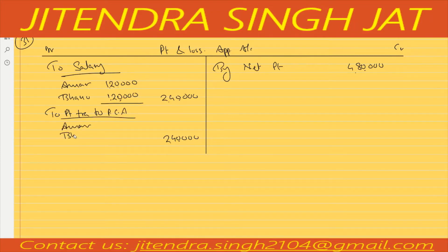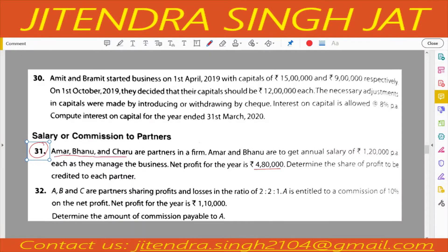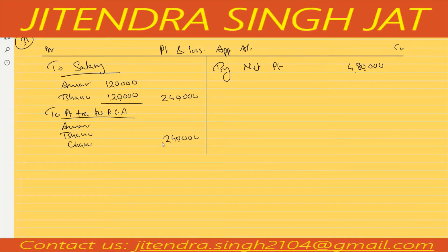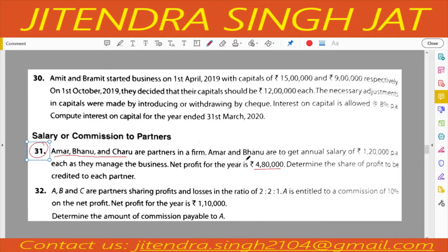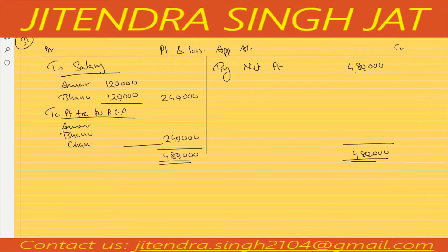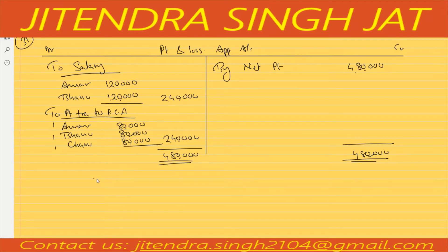The partners are Amar, Bhanu, and the third one is Charu. In which ratio? You can see in the question the ratio is not given, and when the ratio is not given it is distributed equally — 1:1:1. So 2,40,000 divided by 3 equals 80,000. Each partner gets 80,000 profit equally. The key point: when the profit sharing ratio is not given, it is considered that they distribute equally.